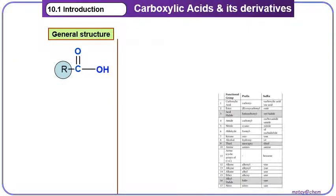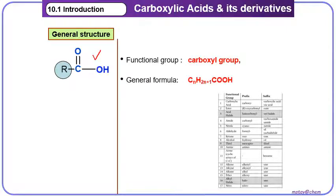The general structure for carboxylic acid is made up from the functional group COOH, which is known as the carboxyl group. The general formula is CₙH₂ₙ₊₁COOH, or simplified as CₙH₂ₙO₂.